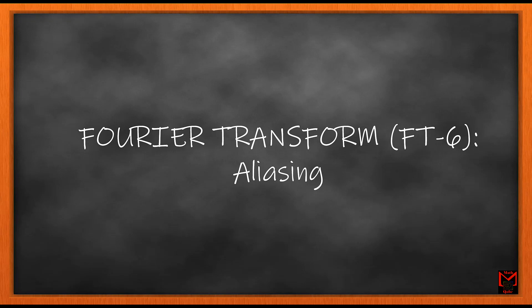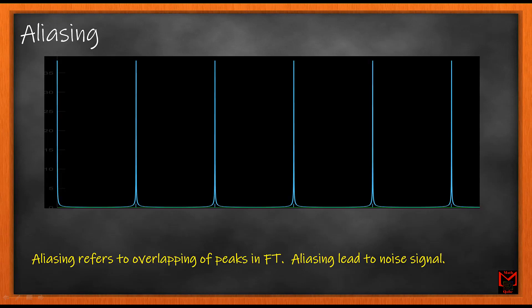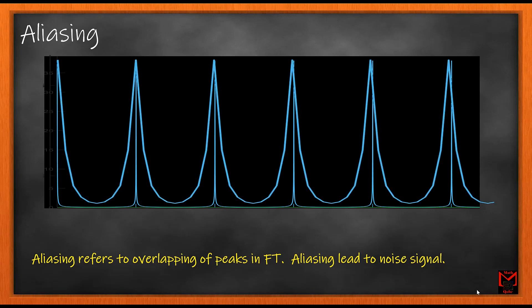Welcome to Mathcubes Fourier Transform Class 6 on aliasing. In today's class we will see what aliasing is and how it takes place in Fourier transform. Aliasing refers to fusion or overlap of Fourier transform peaks. Without aliasing, the Fourier transform peaks are separated at a good distance apart, but with aliasing the peaks get close to one another and their spread overlaps.